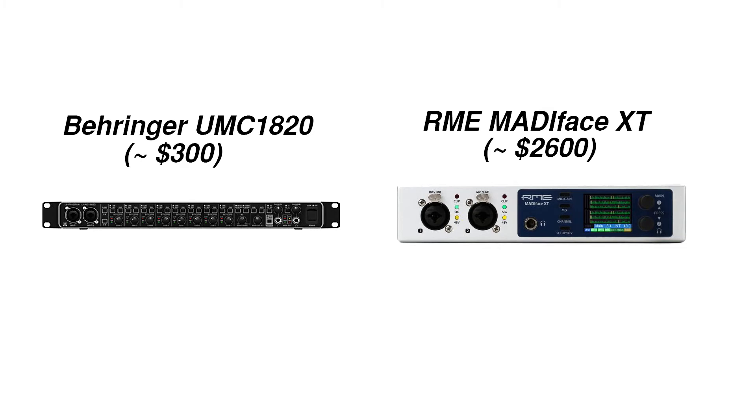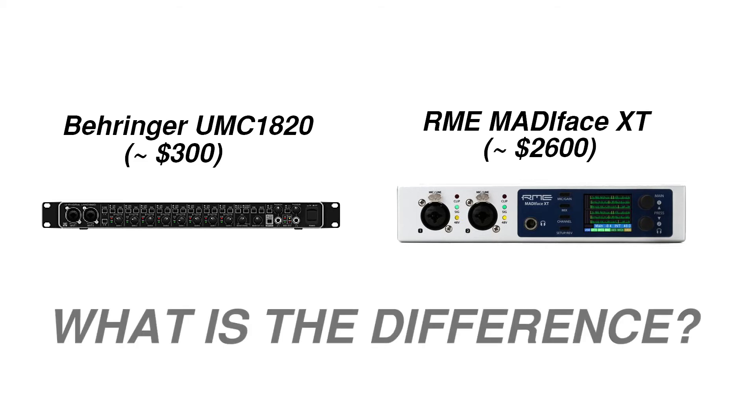Once you've got an idea of how many inputs and outputs you need, it's time to decide if that fits within your budget. You'll find that there are more factors than just the number of inputs and outputs that determine the price of an audio interface. You can find interfaces with eight microphone preamps for less than $300, while you can find interfaces with only two microphone preamps for over $2,000. What's the difference? What other factors determine the price of an interface?